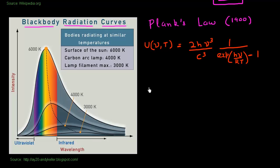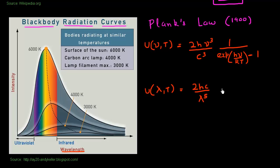We can also rewrite this formula to express the intensity as a function of wavelength, as plotted in the chart. This same formula, expressed as a function of wavelength, is inversely proportional to the wavelength using a power-law term, and has an exponential term containing both the wavelength lambda and the temperature. These relationships together constitute Planck's Law.